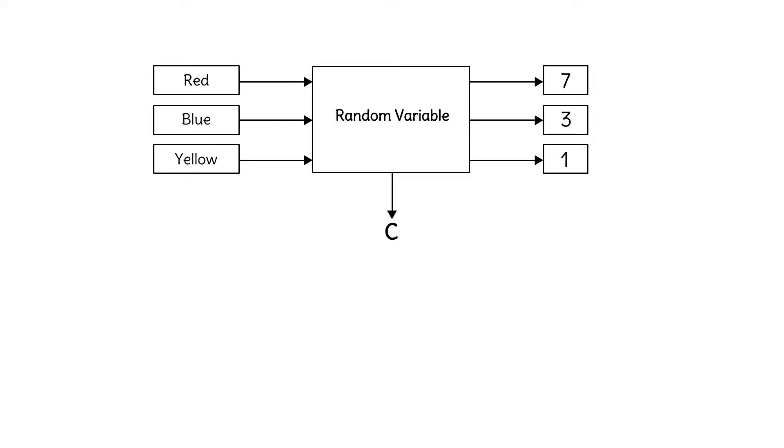We always capitalize random variables. The random variable C produces a value of 7 for an input of red, 3 for an input of blue, and 1 for an input of yellow. This bracket notation shows us there are exactly 3 possible outcomes and 3 possible values produced by the random variable. We don't get intermediate colors like green.